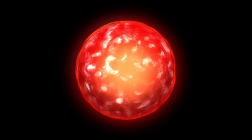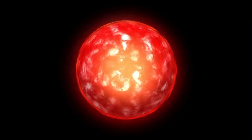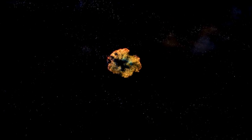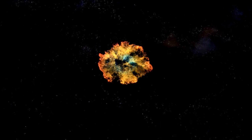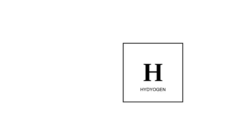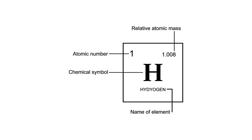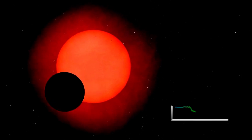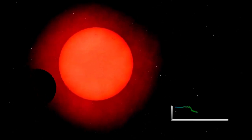In the case of Betelgeuse, a red supergiant nearing the end of its life cycle, this balance has become increasingly unstable. As the star depletes its core hydrogen fuel, the nuclear fusion processes that sustain it undergo significant changes. When hydrogen fusion slows in the core, radiation pressure decreases, causing the gravitational pull to momentarily gain the upper hand. This results in the contraction of the star's outer layers.